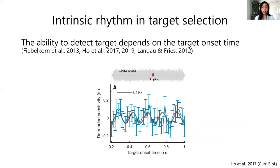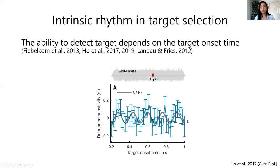There are already studies on intrinsic rhythms in target selection. What they do is jitter the onset time of the target — for example, a target embedded within noise — and then see whether there is a fluctuation of performance, in this case sensitivity. In this study, we can see that there is a rhythmicity at around the theta range when plotted as a function of target onset time. These kinds of results were also shown in the visual domain as well.